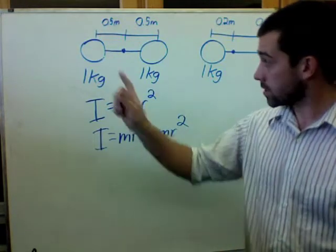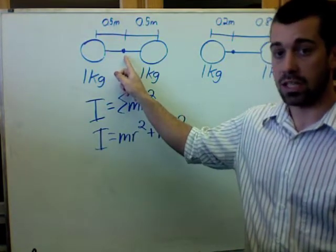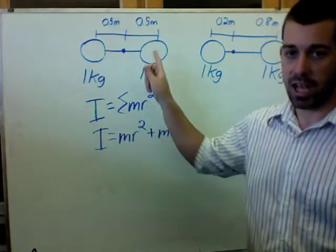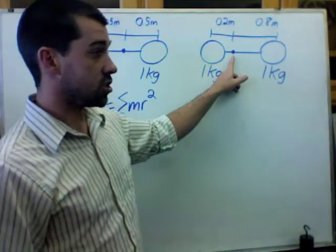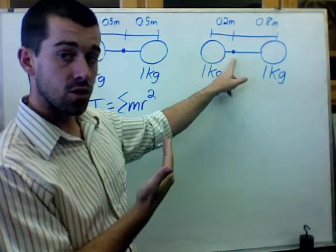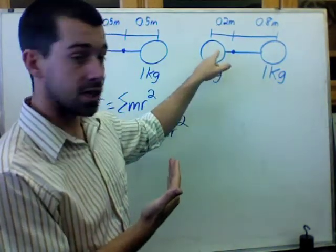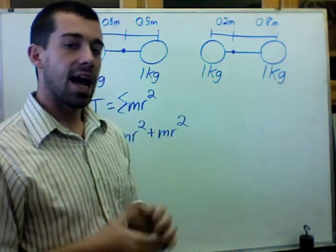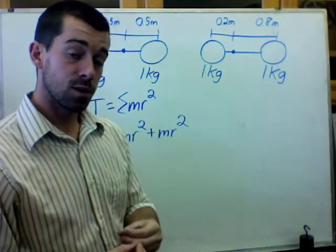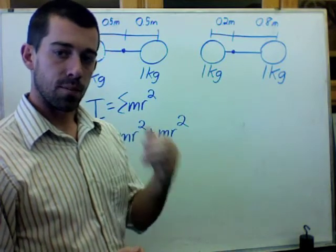In this case, the center of rotation is right in the middle, one half meter from each side. On the other example, the center of rotation is shifted so that it's 0.2 meters from this side and 0.8 meters from the other side. And that's going to give us a different rotational inertia from our first example.